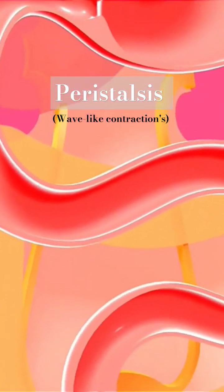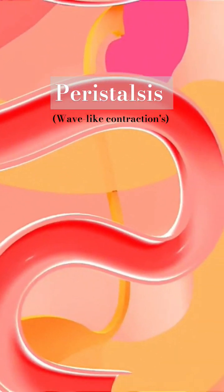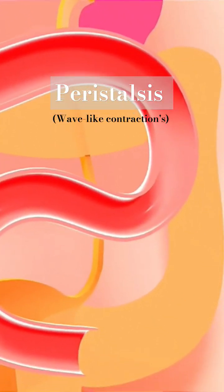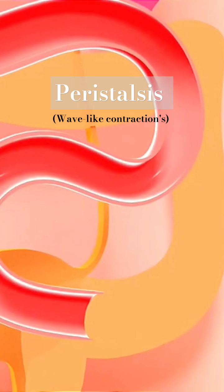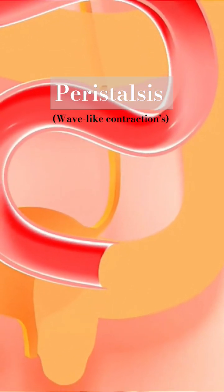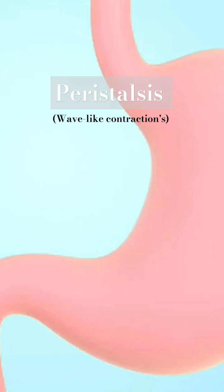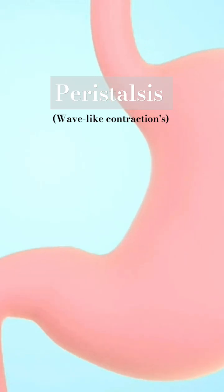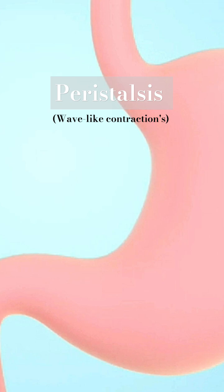Peristaltic waves start at the top of the esophagus and continue the entire length, pushing food ahead of the wave into the stomach. Food particles left in the esophagus cause secondary peristaltic waves, which eliminate residual substances.